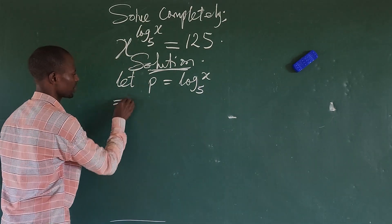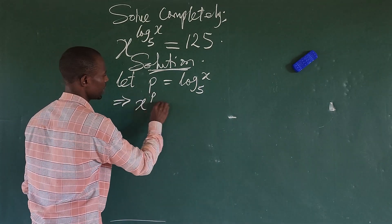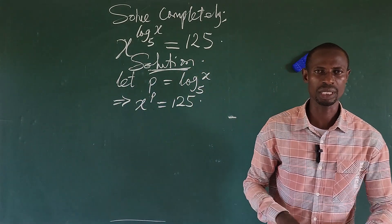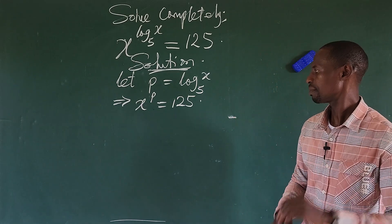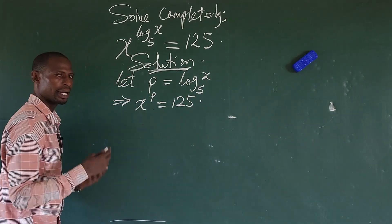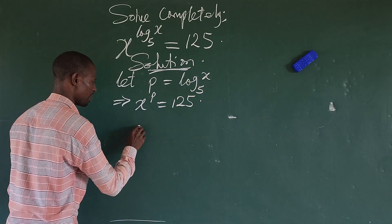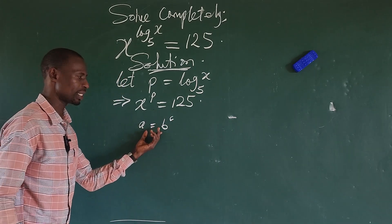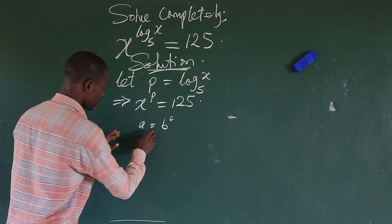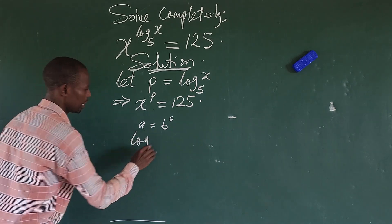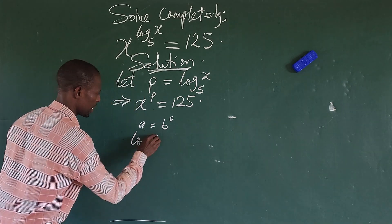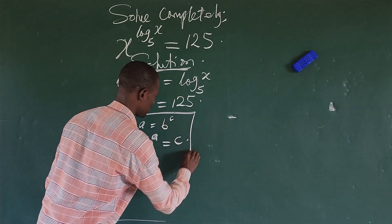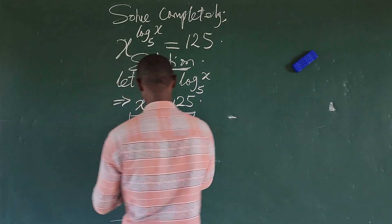We can now rewrite the original equation — it becomes x to the power of p equals 125. We know there is a strong relationship between logarithms and indices. If we have an index form a equals b to the power of c, we can convert this to logarithm form: log_b(a) equals c.